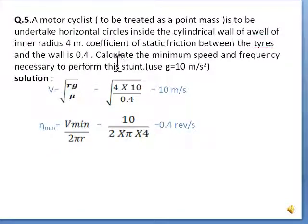Now minimum frequency required equals Vmin / (2πR). This is the formula for frequency. Now substitute values: Vmin is 10, what we got here, then 2 × π × 4. Substitute value of π and you will get answer 0.4 rev/s.